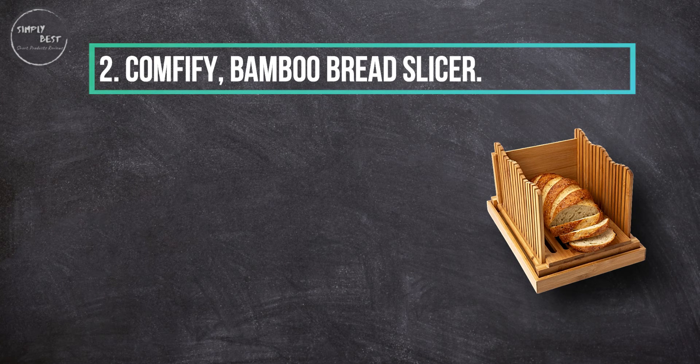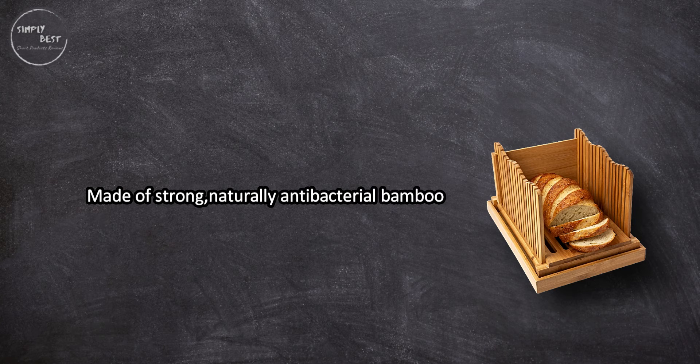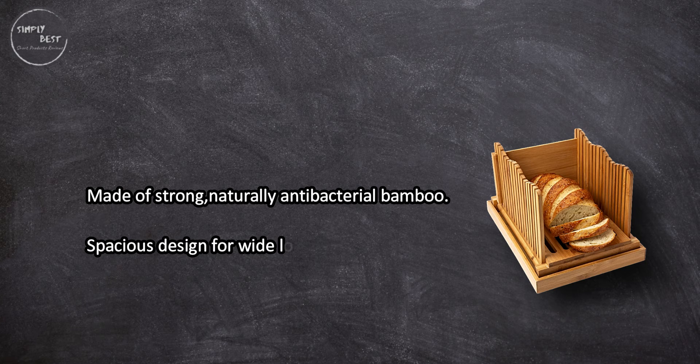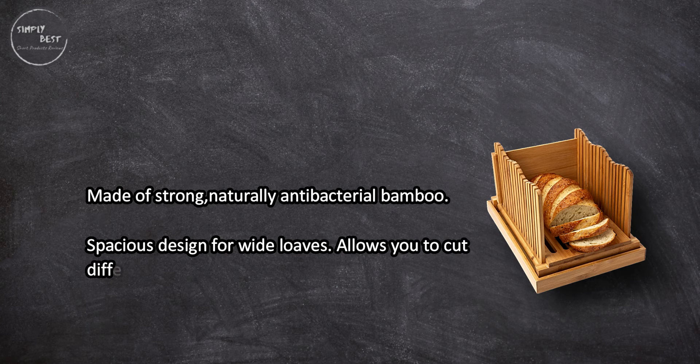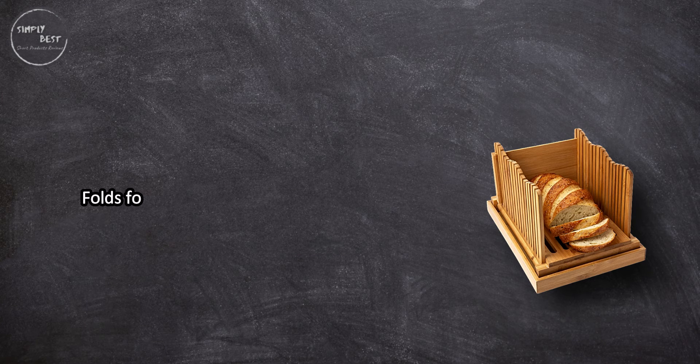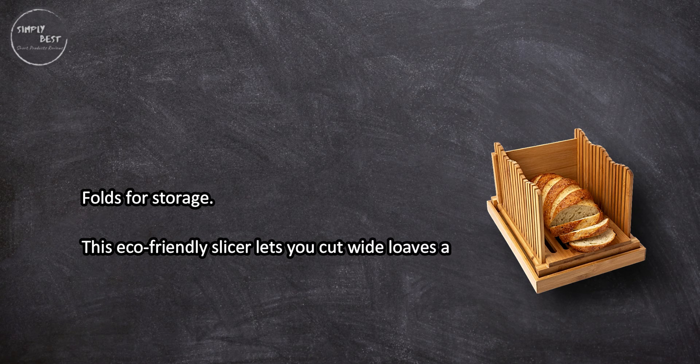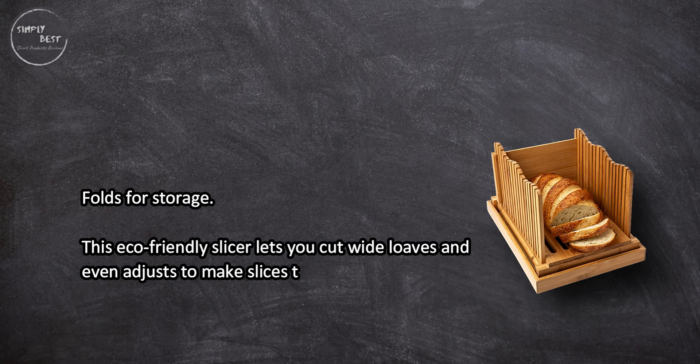At number two, Comfified Bamboo Bread Slicer. Made of strong, naturally antibacterial bamboo, spacious design for wide loaves, allows you to cut different slice thicknesses, folds for storage. This eco-friendly slicer lets you cut wide loaves and even adjusts to make slices thicker or thinner.